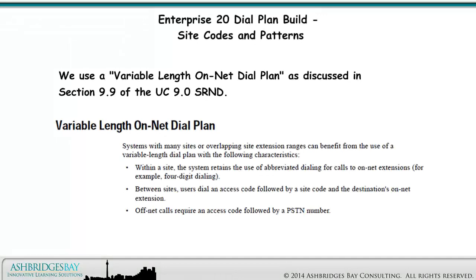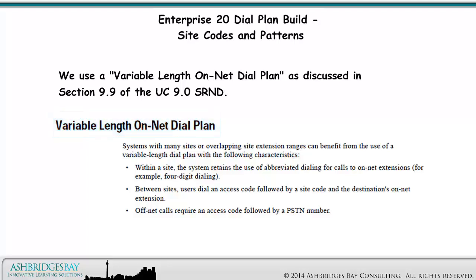We use a variable length on-net dial plan as discussed in Section 9.9 of the UC 9.0 SRND. Within a site, users can dial using four or five digits — abbreviated dialing — as desired at each site. Between sites, users dial an access code followed by a site code and the destination's extension.